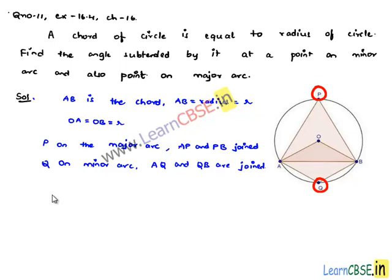Now, here, consider triangle OAB. In triangle OAB, we know that OA is equal to OB is equal to AB, whose lengths are equal to the radius. Therefore, here, this triangle is an equilateral triangle.